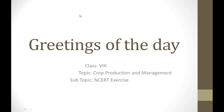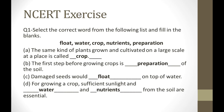Now we will do an exercise that is the back exercise known as NCERT exercise. The first question is: select the correct word from the following list and fill in the blanks. The words are float, water, crop, nutrients, and preparation. These words need to be filled in the blanks. The answer for the first part: the same kind of plants grown and cultivated on a large scale at a place is called a crop.